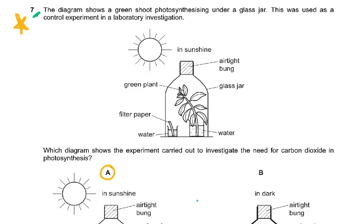Question seven is also mentioned in the examiner's report. Many candidates incorrectly suggested that hydrogen carbonate indicator might be involved in this photosynthesis experiment. Hydrogen carbonate indicator is used when studying photosynthesis and respiration together — it detects CO₂ concentration, decreasing if photosynthesis dominates and increasing if only respiration occurs.